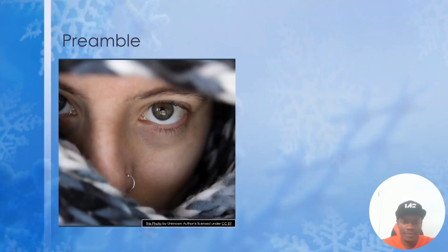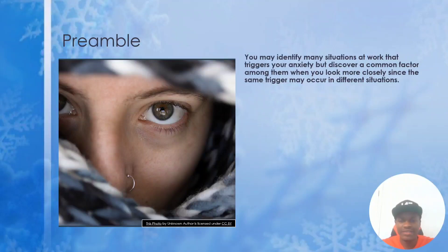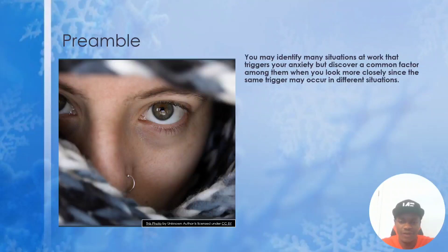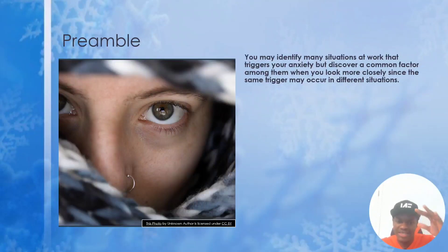So first is the preamble — the preamble of understanding your anxiety. This worksheet works best when you understand a little bit about yourself in terms of exploring your anxiety, so you can discover a common factor that always crops up. You might find a common theme of what you always feel — maybe a stress, maybe a trigger that is common to all the anxiety examples that you might explore using this worksheet.